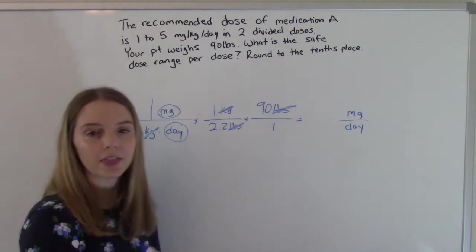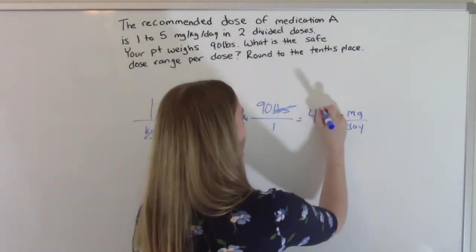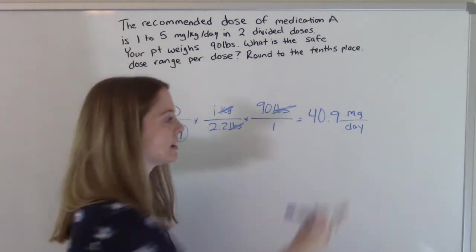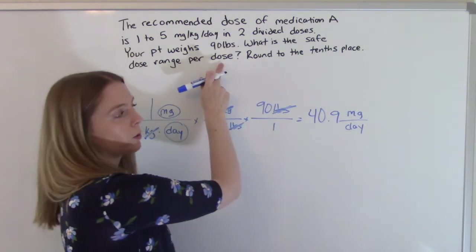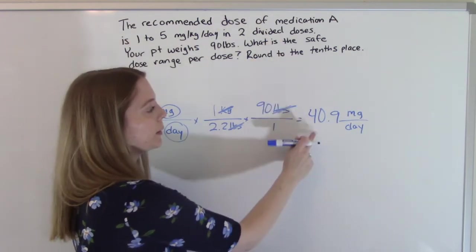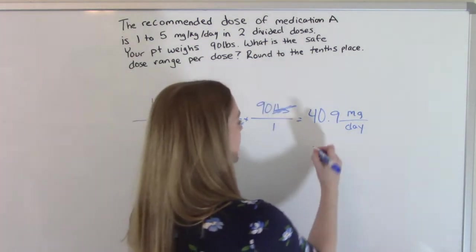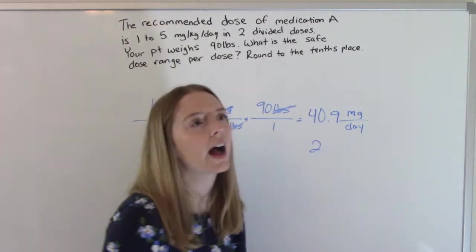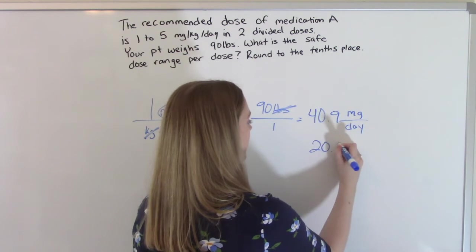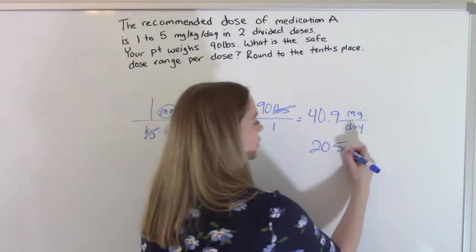Then you punch it in, you do the math and you get 40.9. But we're not quite done because this is per day and it wants to know per dose. It's telling us it's two divided doses. So we need to divide this by two. And then we do it, we get 20.45. But we're rounding to the tenths place. So it's 20.5 milligrams per dose.